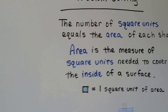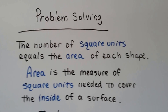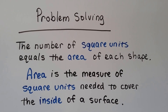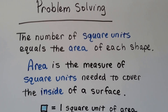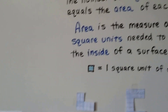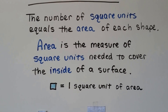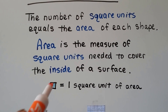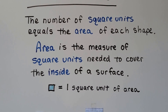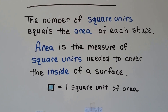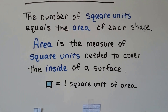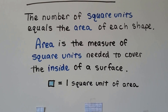Let's do some problem solving. The number of square units equals the area of each shape. So before we were doing line units — now we're going to do square units where we're counting an entire square. That's the area. The area is the measure of square units needed to cover the inside of a surface. This is one square unit of area.